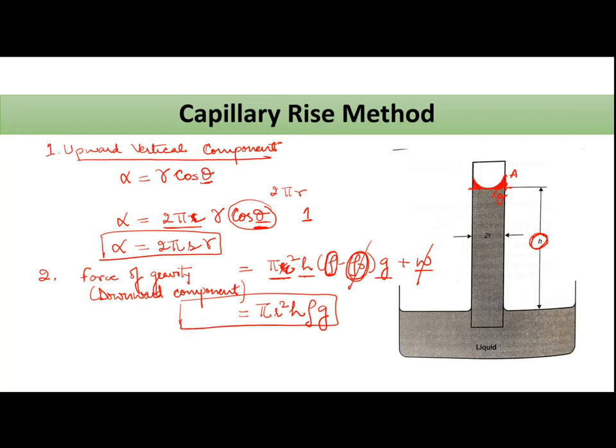So the point at which the upward vertical component becomes equal to the downward vertical component, wahan pe kya hoga? 2πrγ is equal to πr²hρg. You can cut single r with r square. π ke saath π cut jayega. And what you will get from this? You will get surface tension γ is equal to ½rhρg.